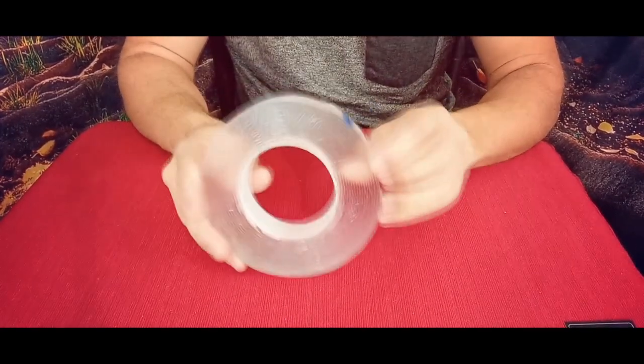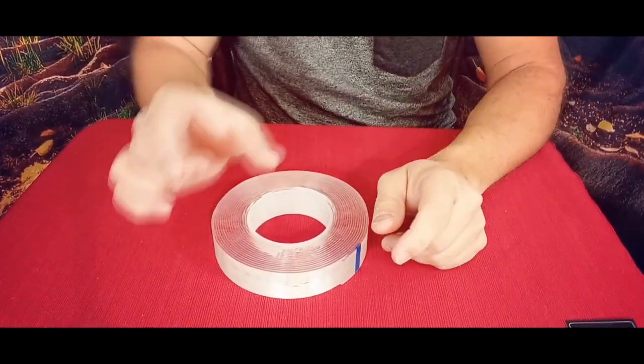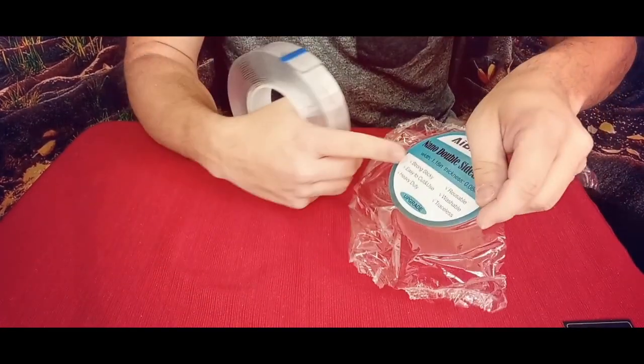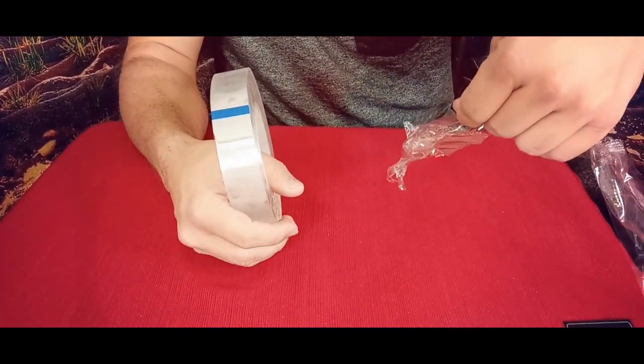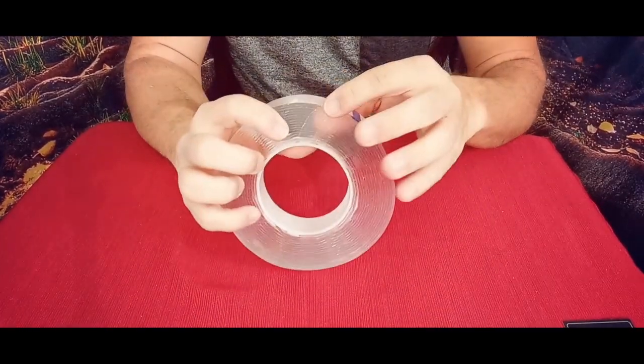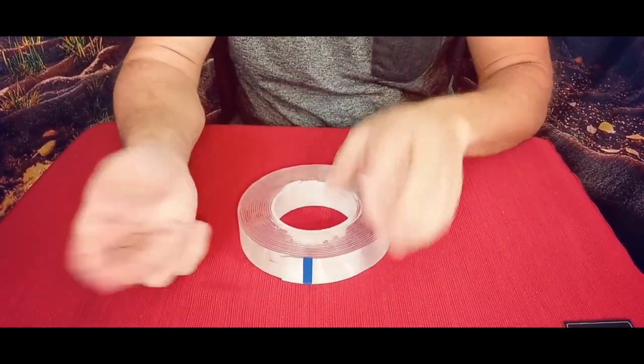So if you have a strip that's maybe an inch long - and this is just a little over an inch, 1.8 inches, and it's 0.08 inches thick - you could cut this into squares and maybe hang up some pictures or things like that with it, as long as you have smooth walls.